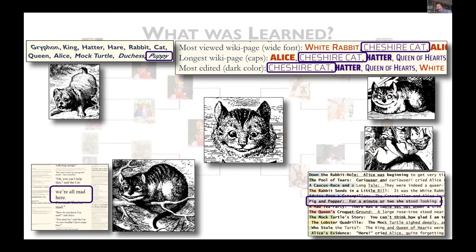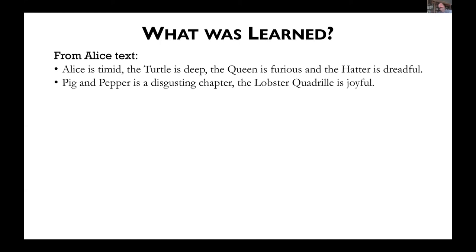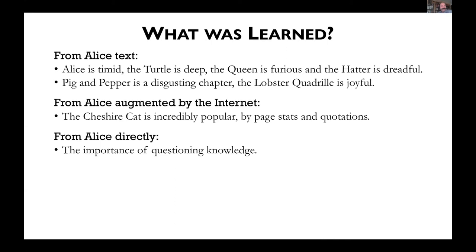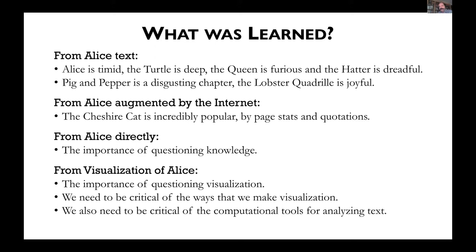What have we learned? From the Alice text we were able to extract things like: Alice is timid, the turtle is deep, the hatter is dreadful, pig and pepper is disgusting, the lobster quadrille is joyful. Augmented by Internet data, we see the Cheshire Cat is incredibly popular by page stats and by quotations. From Alice directly, she repeats things like 'I know,' 'I don't know,' 'I don't know' — the importance of questioning knowledge is really important for Alice. And from a visualization perspective, we need to be more critical of the ways we make visualizations and of the computational tools we use for analyzing text. Thank you very much. Citations for everything can be found on my blog — just search for Alice.